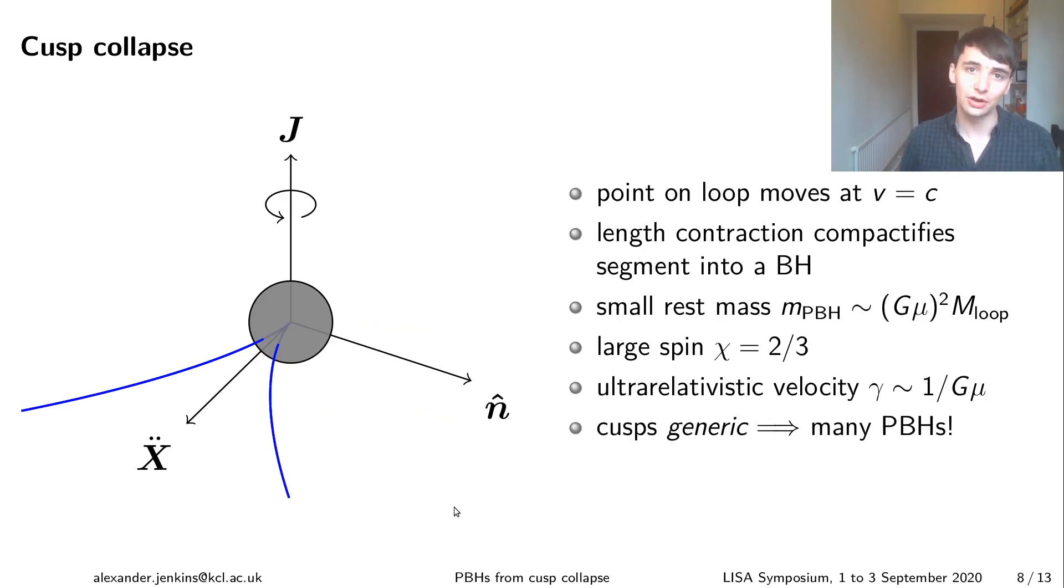What we've managed to show is that there's a much more generic way of forming primordial black holes from loops and this comes from the cusps I was mentioning before. So because the cusp is moving at the speed of light instantaneously and the points around it are also moving very quickly, this portion of the loop undergoes some really extreme length contraction which means it can also collapse. What this means is that rather than the entirety of the loop ending up inside the black hole it's just a small fraction of it and in fact the rest mass of the black hole is something like Gμ squared times the total mass of the loop so much much smaller.